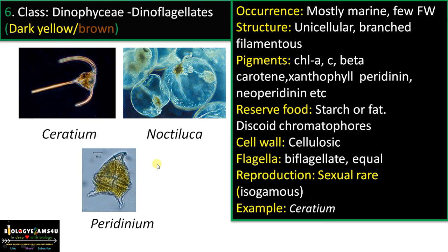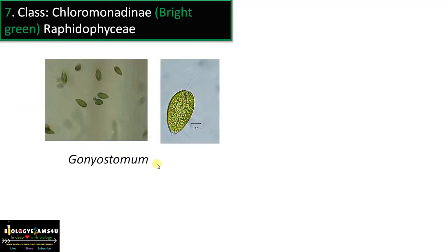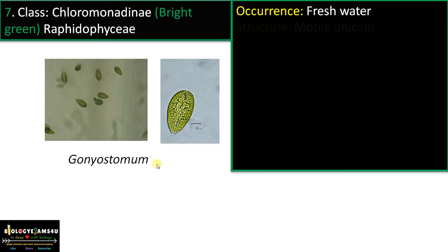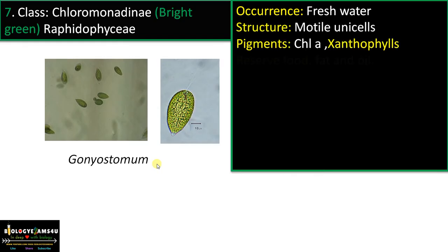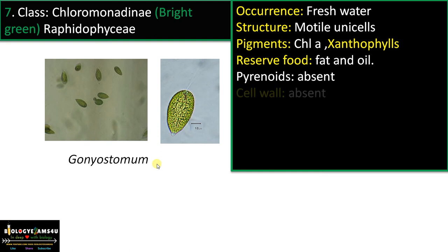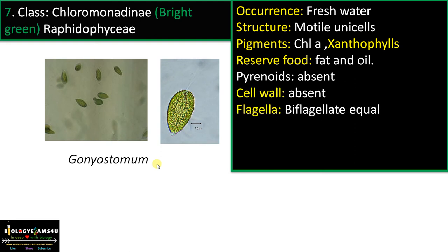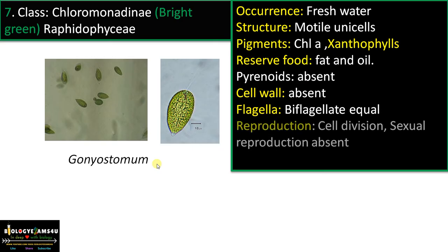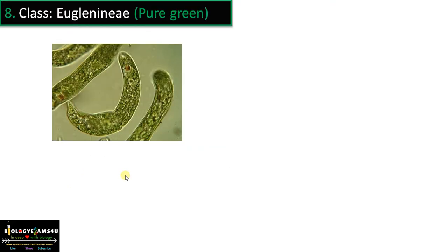Class 7 is Chloromonadineae, also called bright green algae or Raphidophyceae. Occurrence is freshwater. Structure is unicellular, motile. Pigments include chlorophyll A and xanthophylls. Reserve food is fat and oil. Pyrenoids are absent. Flagella: biflagellate, equal (isocont). Reproduction by cell division; sexual reproduction is completely absent. Example is Gonyostomum.